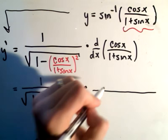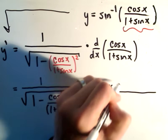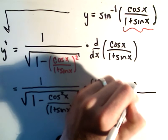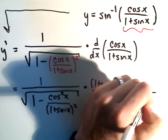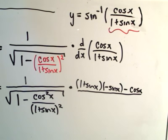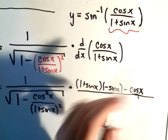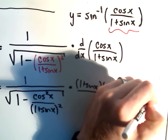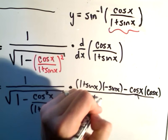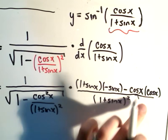We have to use the quotient rule on that. It says we get the bottom — one plus sine x — times the derivative of the top, which will be negative sine x, minus the top part, which is cosine x, times the derivative of the bottom part, which is going to be another cosine x. The constant one just goes away. And then this is all over one plus sine x quantity squared.